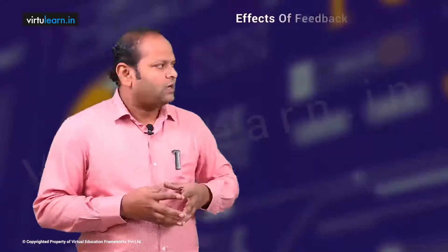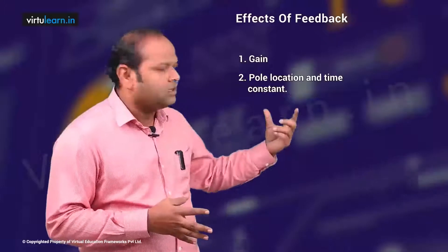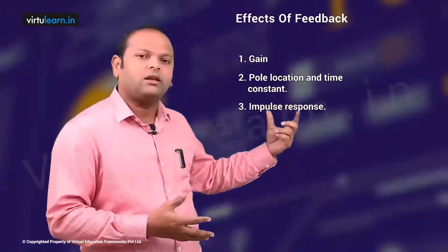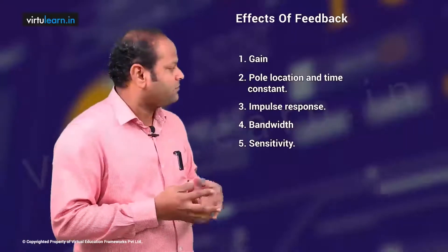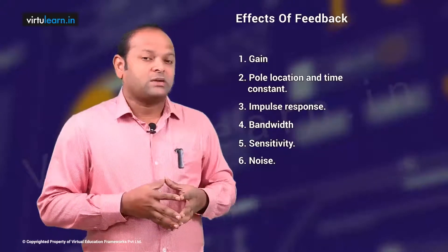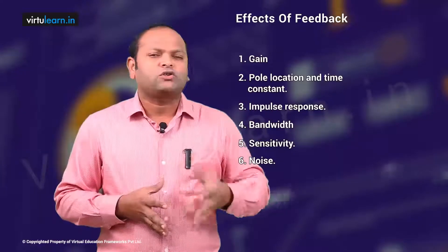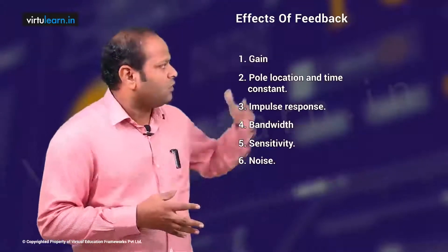Let us look at the effects of feedback. I want to concentrate on the effect of feedback on these parameters: the first one is the gain, second is pole location and time constant, third is impulse response of the system, then bandwidth, then the sensitivity of the system which is very important in control systems. We will also see the effect of feedback on noise or disturbance, and what will be the effect of positive feedback, which is also called regenerative feedback, on the system.